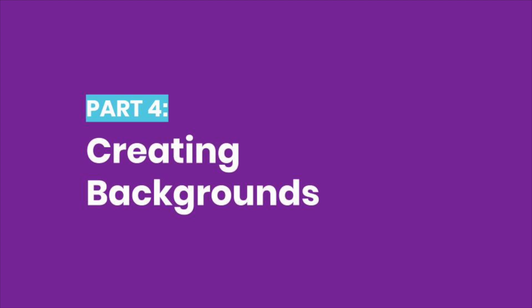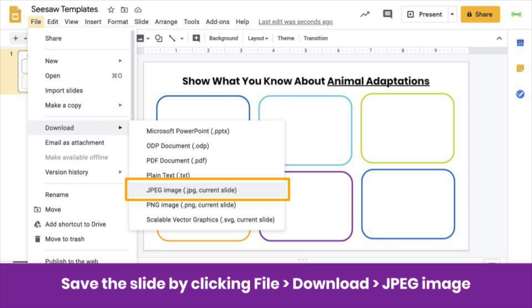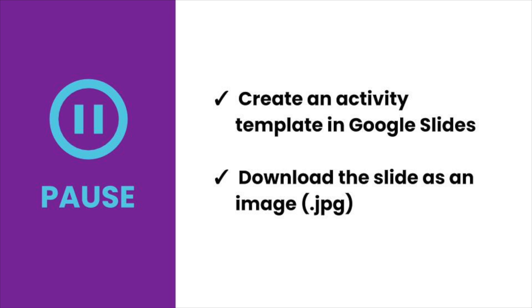You might be wondering how to create template backgrounds like the ones shown here — we have some tips. Google Slides is a popular tool to use to create backgrounds for Seesaw activity templates. The dimensions of a Google Slide fit really well on the Seesaw canvas. Use shapes, text boxes, and more to create your template background. When you're done, download the slide as an image: click File, Download, and choose JPEG. Keep in mind that your slide will download as a flat image. Pause now and create a template background in Google Slides.